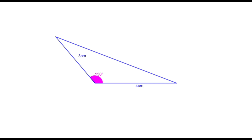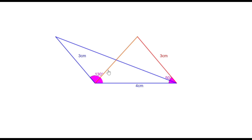Now look at the first triangle — it has the same base. Take this 4 cm side as the base, take 50 degrees at one end, draw a line of length 3 cm, and join the two points to get the first triangle. When you look at the question, the triangle is just flipped — 50 degrees and 3 cm are on the other side. I just flipped the triangle so that the angle and side are on the other side.